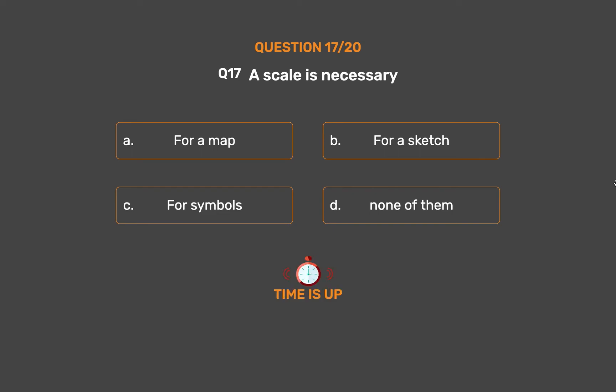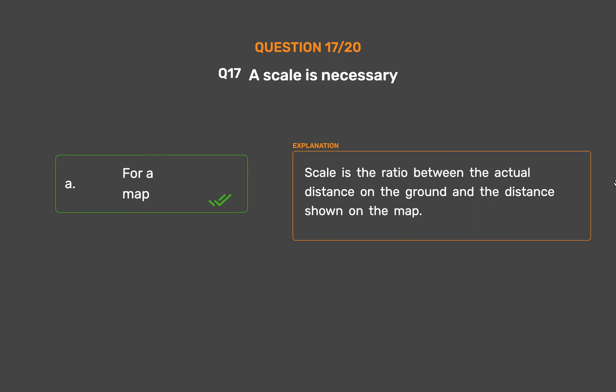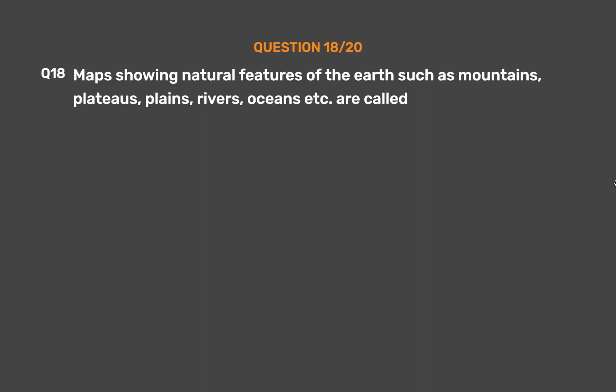The correct answer is Option A: For a map. Scale is the ratio between the actual distance on the ground and the distance shown on the map.